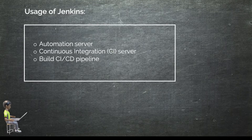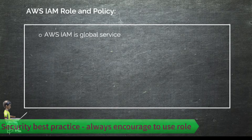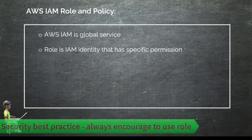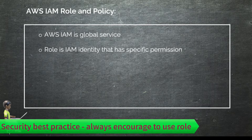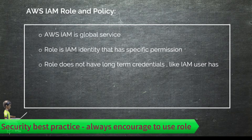In this lecture, I'm going to show you every step to build a Jenkins server using Terraform. One of the key resources for building a Jenkins server is IAM role and policies. It is always encouraged to use a role because a role does not have long-term keys. IAM is a global service, and a role is an IAM identity that has specific permissions defined via policies.